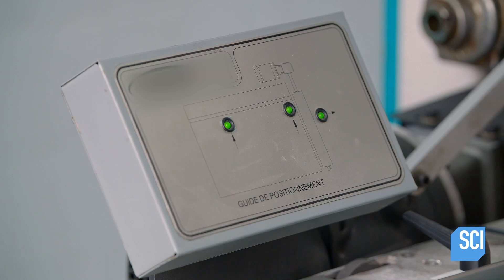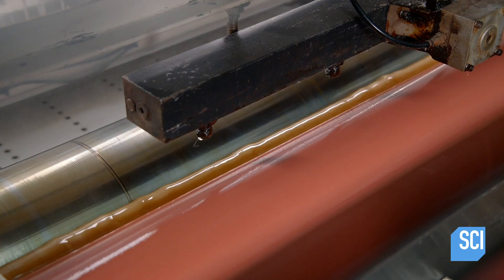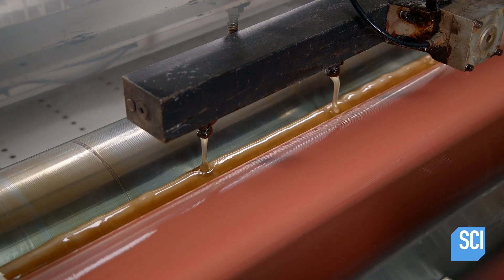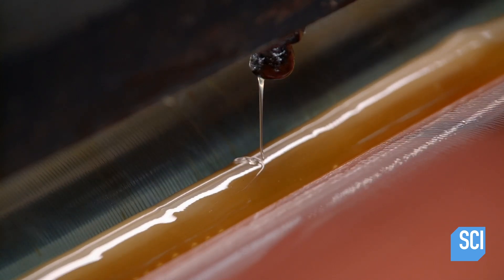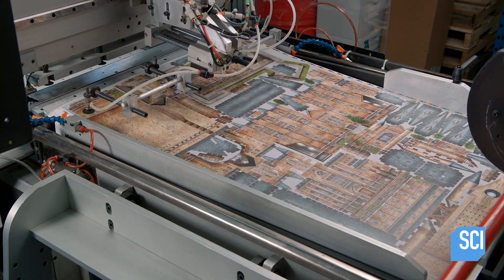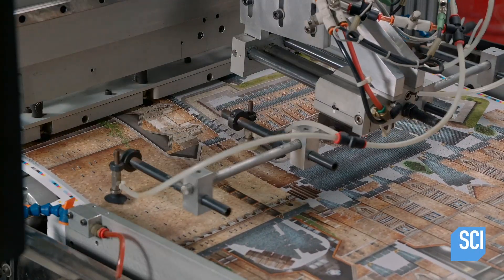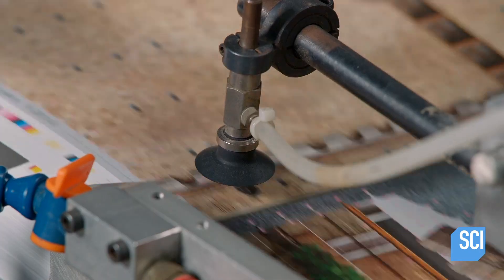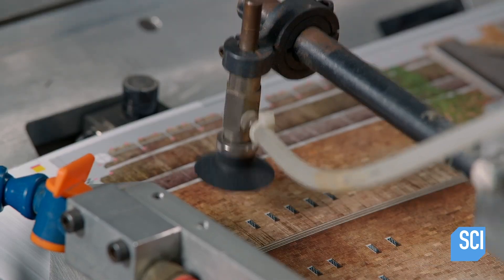A technician feeds one sheet at a time into a custom-designed lamination machine. The first station spreads hot glue over the top of the foam sheet. An automated arm with vacuum suction cups lifts a single sheet of printed paper and places it on the glue-coated foam sheet.